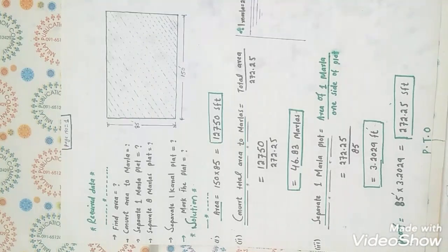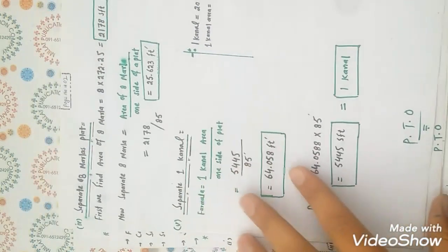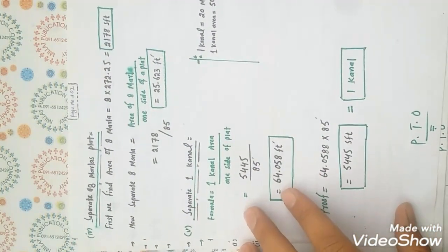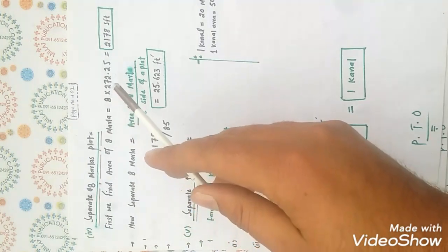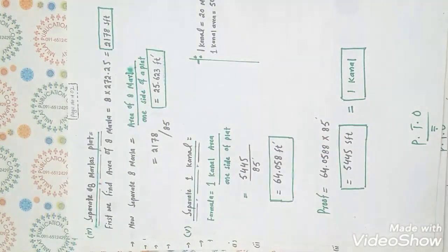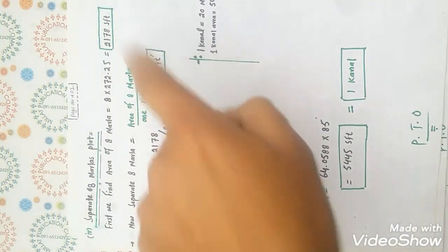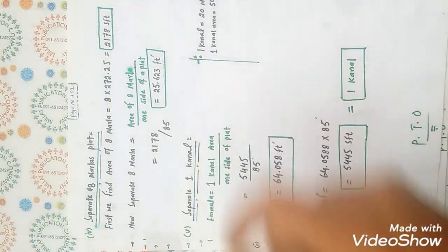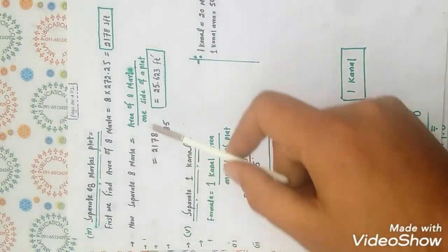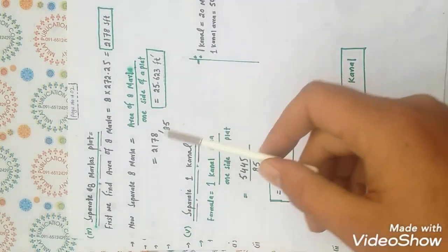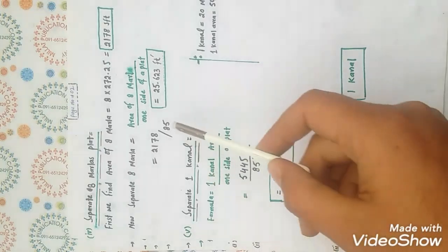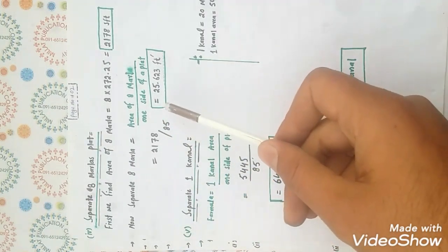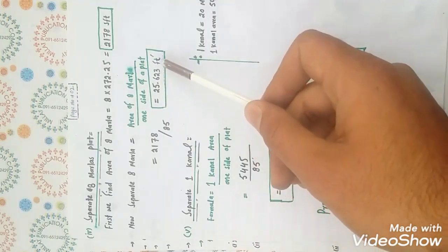Now, to separate an eight Marla flat: first find the area of eight Marla, which equals 8 multiplied by 272.25, giving an area of 2,178 square feet. The formula for separating eight Marla is: area of eight Marla divided by one side of the flat. So 2,178 divided by 85 — where 85 is one side of the total area — equals 25.623 feet.